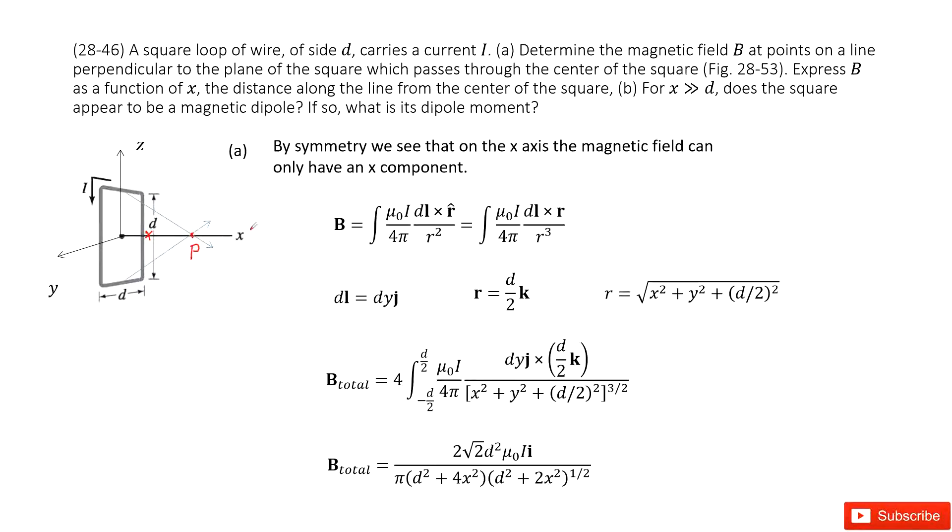We consider the Biot-Savart equation. For a small segment, we can consider it is just in the j component. Then, we can write down the x component and the magnitude for r, input the dl and r inside. We get the function that looks like this. You can see j cross i is the i component. Do the integral and you get the answer there.